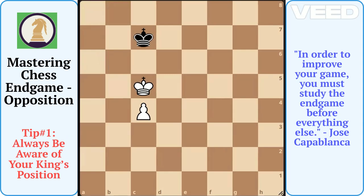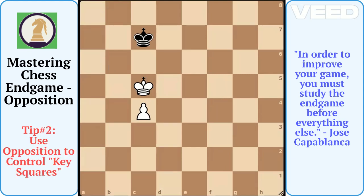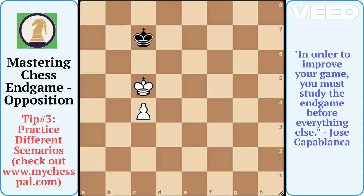Here are a few tips to remember. Always be aware of your king's position — keeping your king in opposition often means being in a more favorable position to push your pawns or block your opponent's pawns. Use opposition to control key squares; by achieving opposition, you can control important squares on the board, often leading to the promotion of your pawn. Practice different scenarios: the more you practice endgame positions, the better you will become at recognizing and achieving opposition.